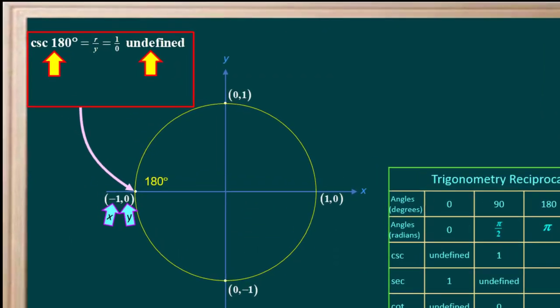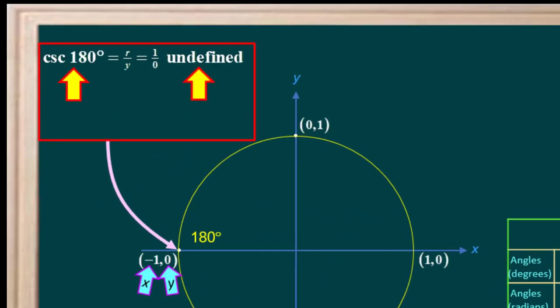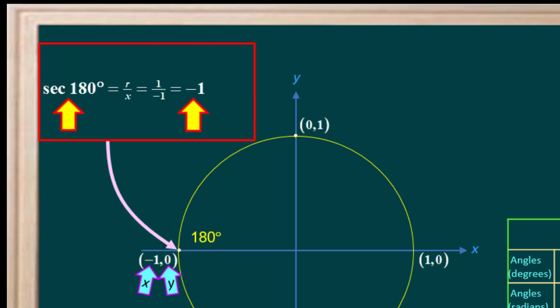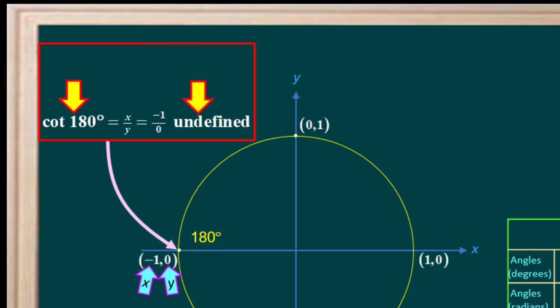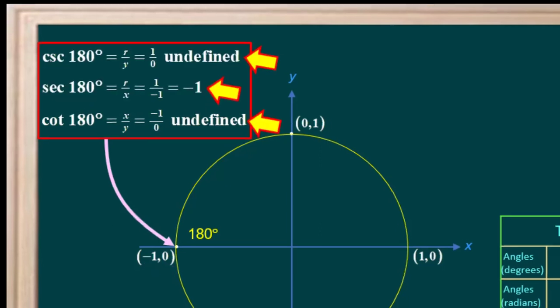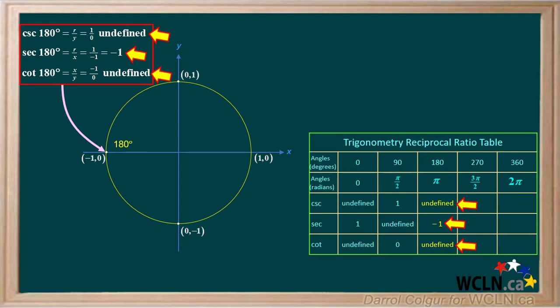Now we'll move to 180 degrees. The cosecant is r over y, which is 1 over 0, and 1 over 0 is undefined. The secant is r over x, which is 1 over negative 1, or negative 1. And the cotangent is x over y, or negative 1 over 0, and negative 1 over 0 is undefined. Now we'll add these three values for 180 degrees to our reciprocal ratio table.